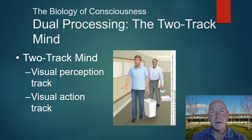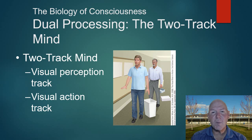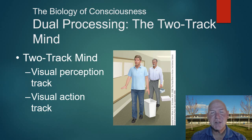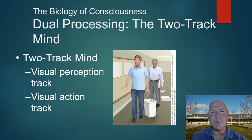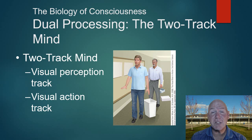Blind sight is a fascinating phenomenon where people with certain visual deficits can navigate a room or maze without bumping into things, even though they can't consciously see. Light enters through the eyes, travels through the thalamus and optic chiasm, and processing occurs all along the pathway before reaching the visual cortex. People with blind sight process information without conscious awareness — this is what we mean by a two-track mind. Unlike computers, which are serial processors, your brain processes multiple things simultaneously, much of it unconsciously.